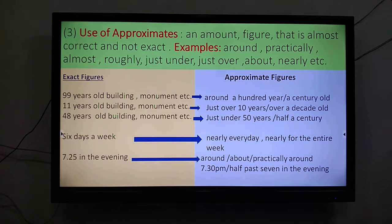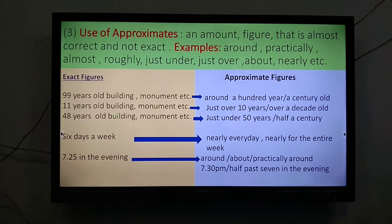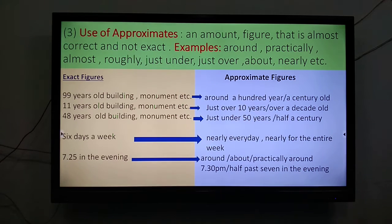We also had something about time — 7.25, 7.28, 3.49, or even 3.58. For such things we could use approximates: around, about, practically around. So instead of 7.25 p.m., you could write practically around 7.30 p.m., about 7.30 p.m., around 7.30 p.m., or you could write around half past 7 in the evening, about half past 7 in the evening, or practically around half past 7 in the evening. There are different ways to approximate exact figures.